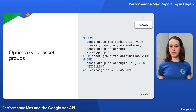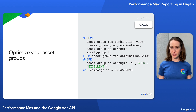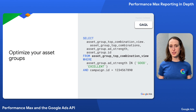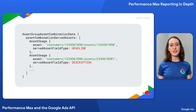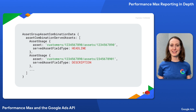So where the asset group asset report gave us a performance label for each asset, the asset group top combination view gives us an idea of which assets perform well in combination. Each row of this report will contain a list of asset group asset combination data objects containing the top performing asset combinations in an asset group. For example, a single asset group asset combination data object might look like this.